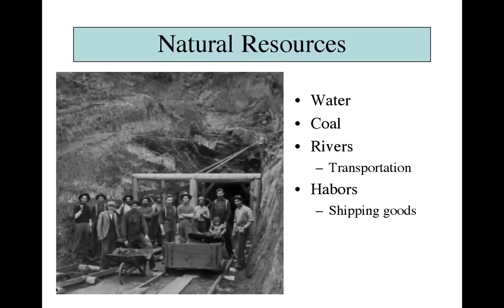Rivers were also very important because they were the early forms of transportation. When a textile was created in a factory, they would put it on a ship in the river; the ship would travel downstream and take it to the marketplace where people would buy those goods. Harbors were also important for shipping goods, as they allowed boats to come in and out easily, and there was no problem transporting before railroads were invented.